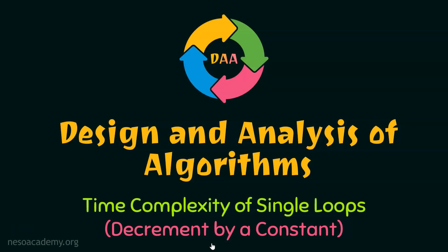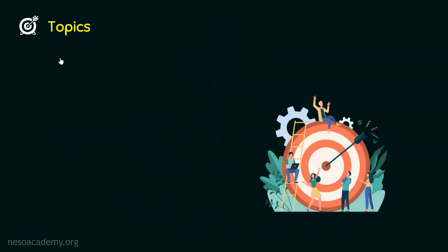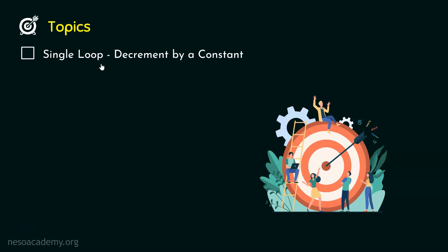In our previous presentation, we understood how to find the time complexity of single loops where in the update expression, we increment a variable by a constant. Now in this presentation, we will understand how to find the time complexity of single loops where in the update expression, we decrement a variable by a constant. The topic of this lecture is: single loop decrement by a constant.